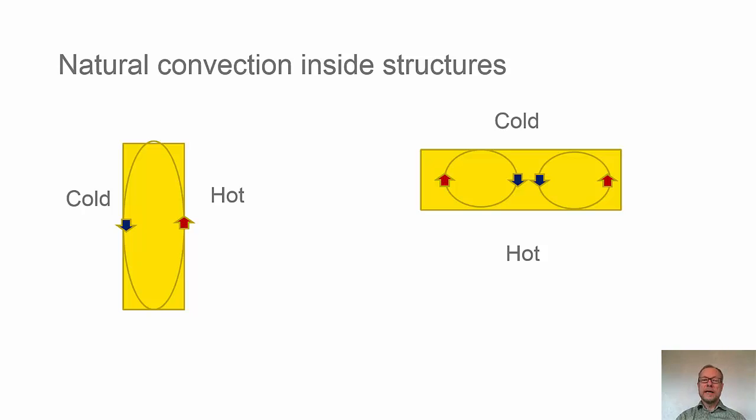We can have natural convection inside the structures. On the left hand side, we see a wall with a hot side and a cold side, could be inside and outside. Since we have a buoyancy effect, air that is warmer can flow upwards. On the cold side, flow downwards.